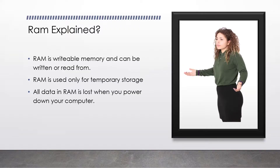So when would you use RAM? You would use RAM when you write a program that deals with variables, for example. Whenever you program in C and you have a program that stores 50 in variable A, that 50 is actually getting stored in your computer's RAM. When you power down your computer, that 50 in RAM is gone forever.